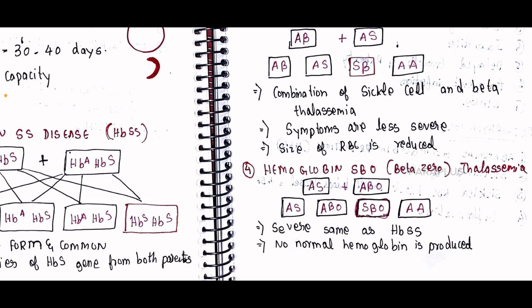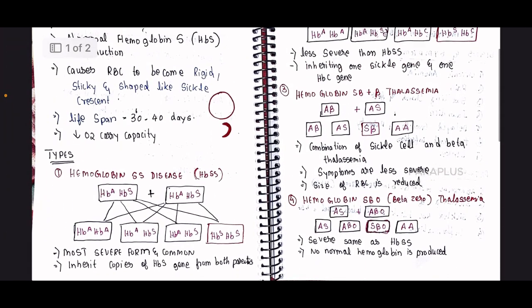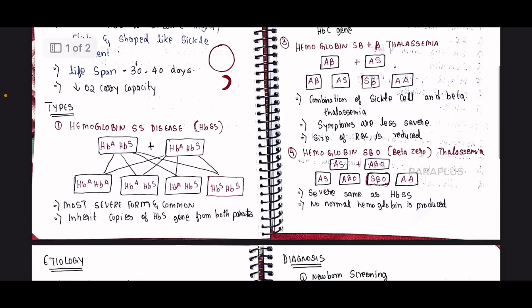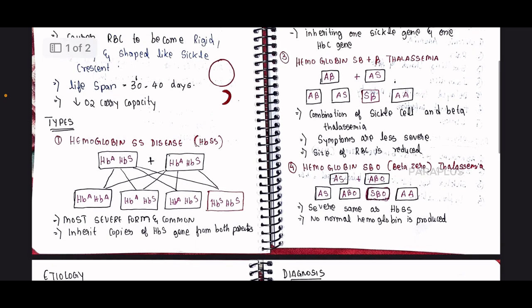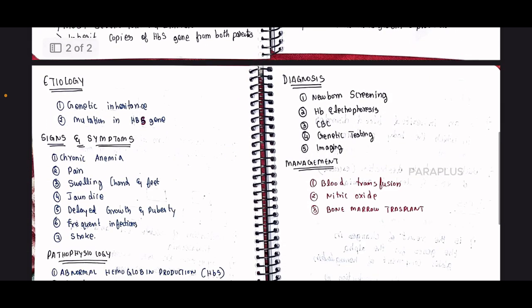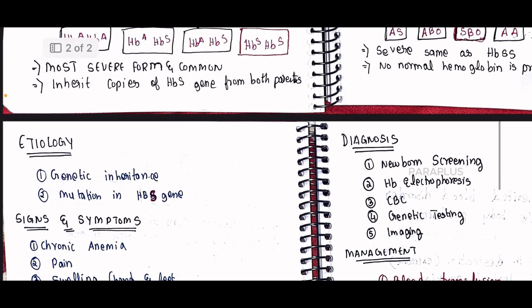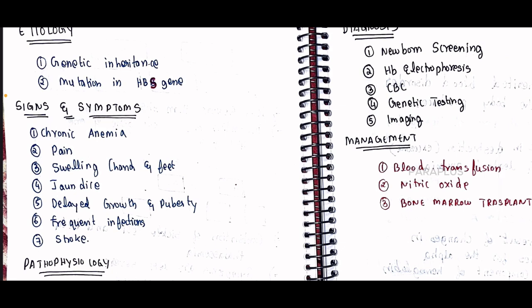HbS beta-zero thalassemia is a very severe type of sickle cell anemia and requires immediate treatment. No normal hemoglobin is produced in this type. This condition involves a mutation in the HbS gene and is a form of genetic inheritance.